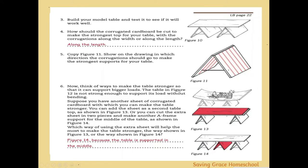Depending on which way the corrugations go, the table will be strong in one direction. If the corrugations go from top to bottom, you can fold it in half lengthwise, but placing something in the middle may cause it to fold up and over. If the corrugations run along the width, the object will be pretty weak in that direction.